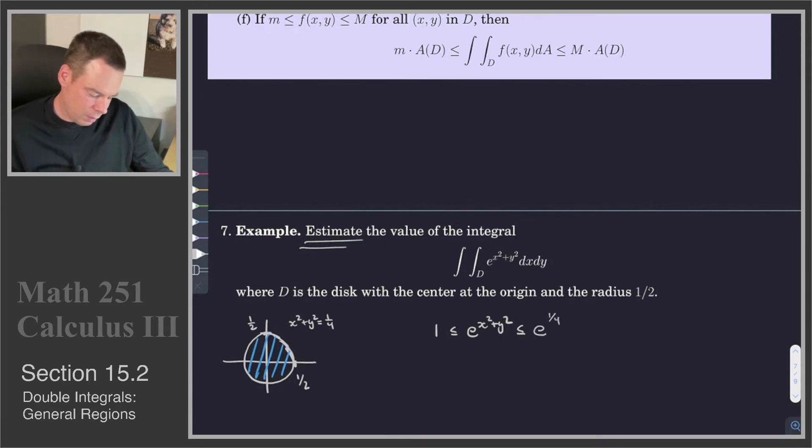So we're going to let this be our little m and this be our big M in that statement up above. So that means now that the double integral over this region D of e to the x squared plus y squared dA is trapped between e to the one-quarter times the area of the region D, and it's bounded below by 1 times the area of the region D.